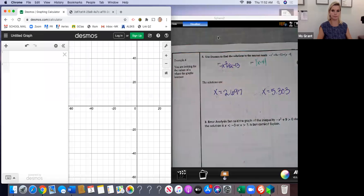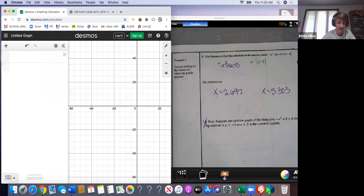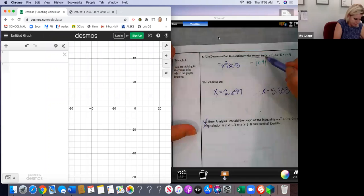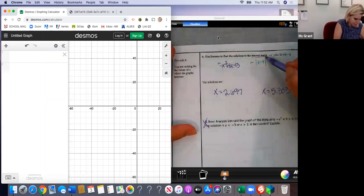They are 2.697 and 5.303. Those are the x values of the coordinates where they intersect. Okay, we won't wait. Oh, Miss Grant, it says to the nearest tenth. So wouldn't it be 2.7 and then 5.3? Nearest tenth, x equals 2.7, x equals 5.3. Good. Okay, all right.